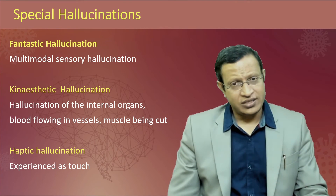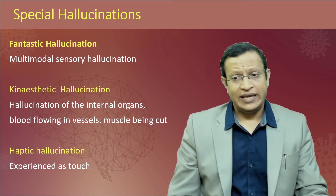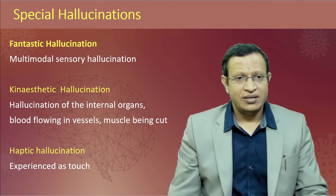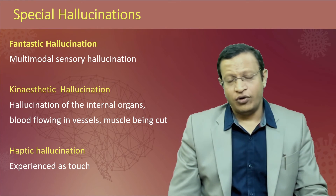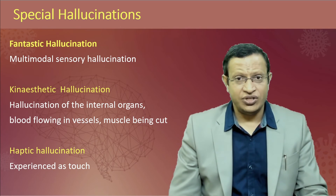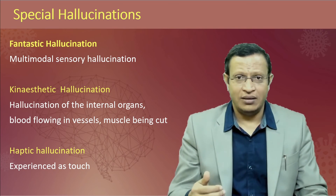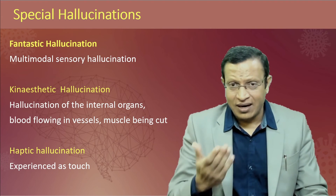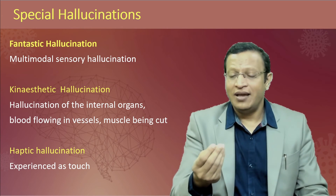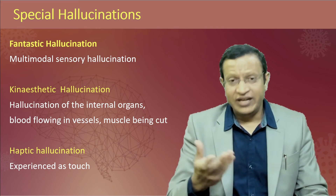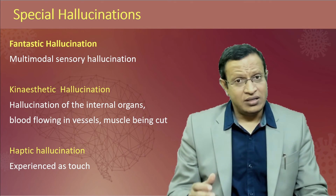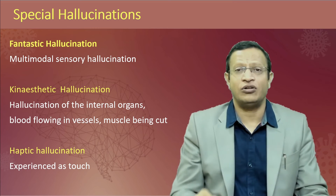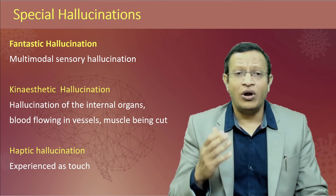Fantastic hallucination, also called dissociative hallucination, is a multimodal sensory hallucination — he can see, hear, and touch the hallucination. Kinesthetic hallucination is an important diagnostic feature of schizophrenia. The patient will clearly say he can feel somebody cutting his brain — nobody can feel the brain being cut — or that his intestines have been cut, even though there are no sensory nerves on the intestines. Or he can feel the blood flowing in his vessels and gives a clear description of the direction, which is not possible. These are called kinesthetic hallucinations.